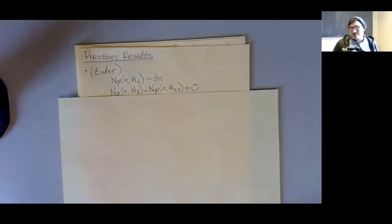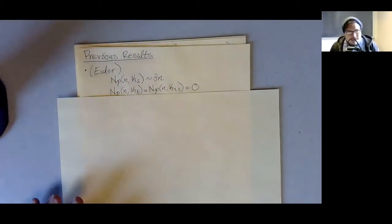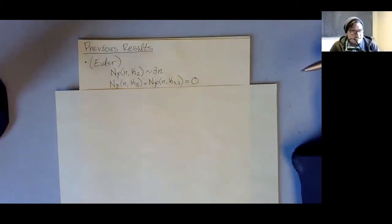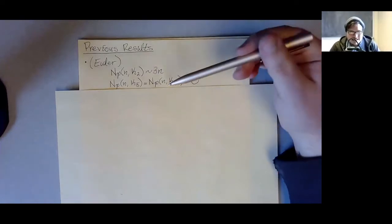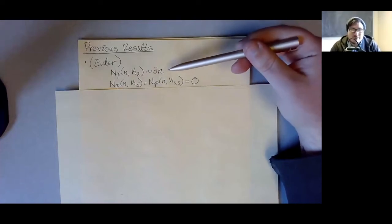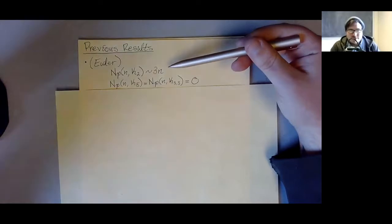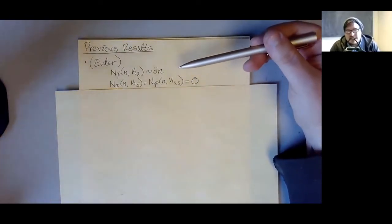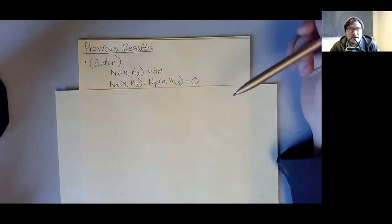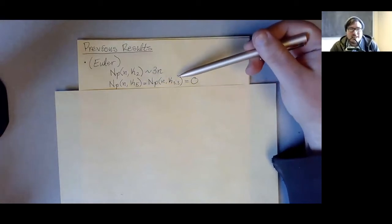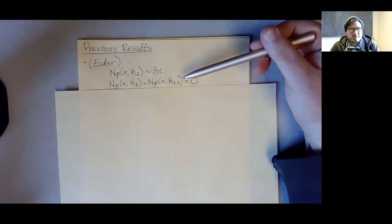Let me tell you a bit about some previous results. The first results on this, although not phrased this way, really go back to Euler with the invention of planar graphs. n_P(n, K_2) — that's just asking what is the maximum number of edges that can be in a planar graph — is well known to be about 3n. I'm only caring about asymptotics, so really it's like 3n minus 6, but I just care about the leading term.